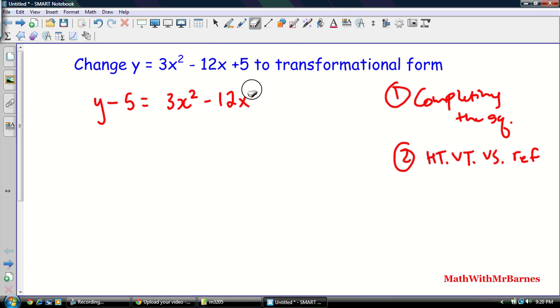All right, so now my next step is an optional step, but I recommend doing it. Take this 3 out, so you end up with y minus 5, factor out the 3, so you end up with 3(x squared minus 4x). Just take the 3 out, that's all you need to take out, not the x, just the 3.